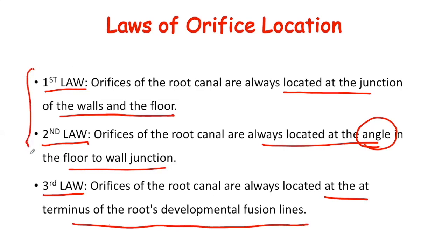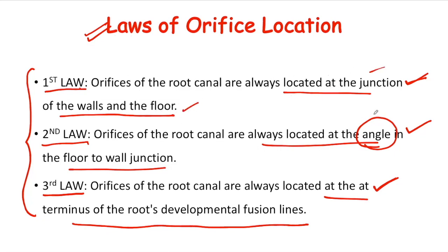To summarize the three laws of orifice location without confusion: think of it like saying I'm staying in India — that is one location. More precisely, I'm staying in Chandigarh, which is in India. Even more precisely, I'm staying in sector 23 of Chandigarh. Similarly, the first law says orifices are at the junction of floor and wall; the second says they are at the point angle in that junction; and the third says they are at the terminus of roots' developmental fusion lines — each giving a more precise location.